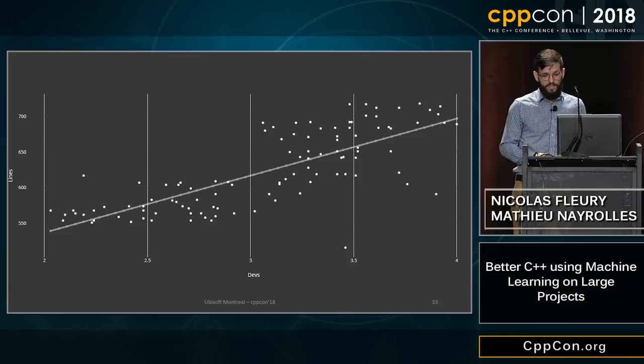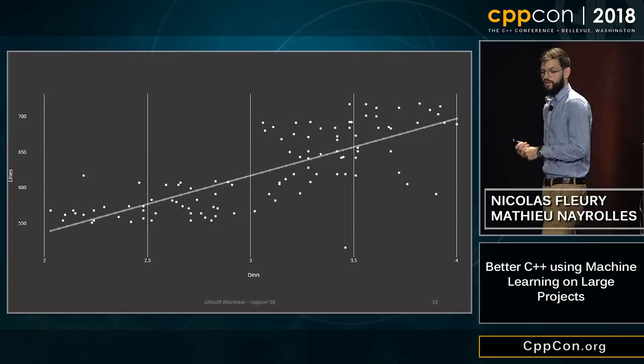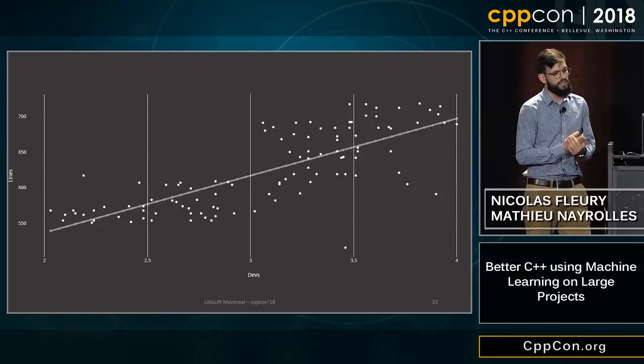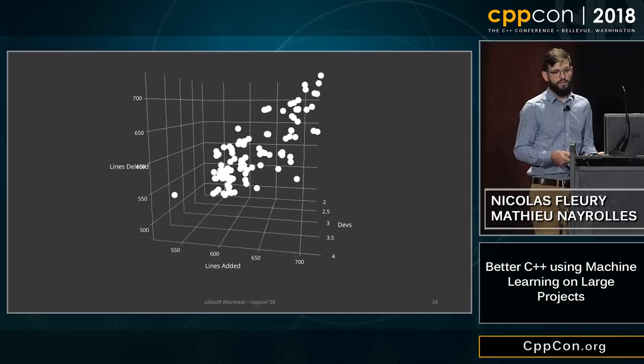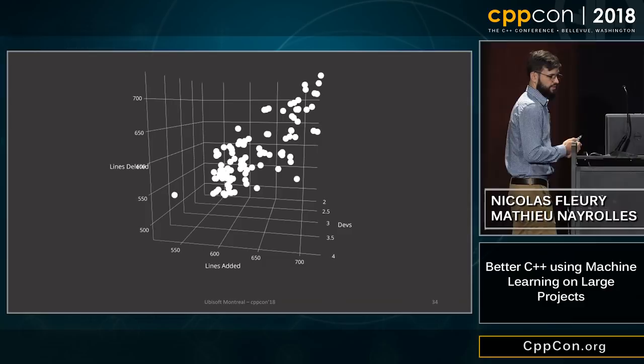If you take three features — lines added, lines deleted, and devs — you can still model the data and add a plane in this representation. But if you push beyond our 40-plus features, you can't just draw a graph beyond 3D. So what you can do is use a covariance matrix, which bags together features that seem to push in the same direction.